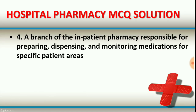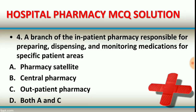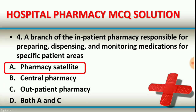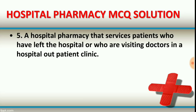Question number four: a branch of the inpatient pharmacy responsible for preparing, dispensing, and monitoring medications for specific patient areas. Options: pharmacy satellite, central pharmacy, outpatient pharmacy, or both A and C. The right answer is option A, pharmacy satellite — it is called a pharmacy satellite.